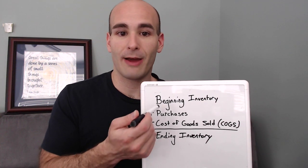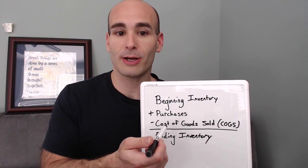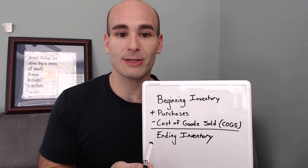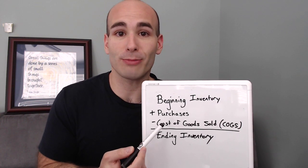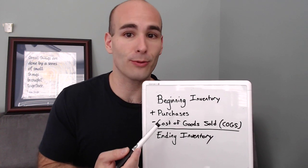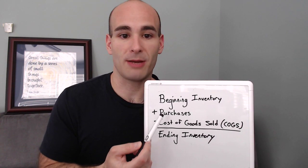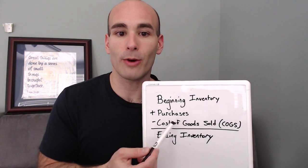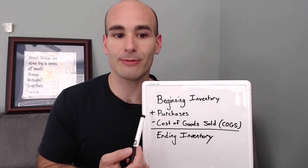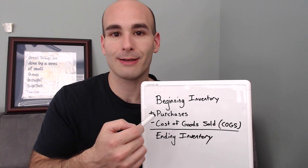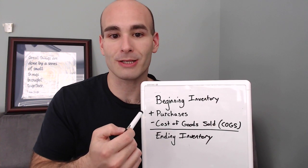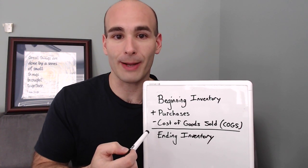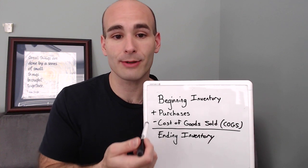Consequently, let's say you have beginning inventory, cost of goods sold, and ending inventory, but you don't know how much you bought that month, quarter, or year. Same deal — reverse engineer it. Solve for X. What number would you have had to pay in purchases for all this to roll the right way? Pretty simple.